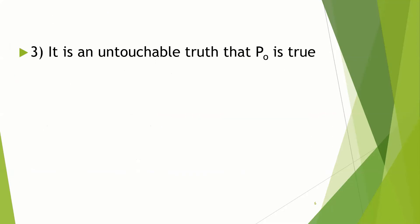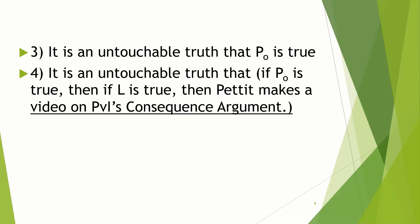Third premise: it's an untouchable truth that P is true. That seems reasonable — there's nothing anyone can do now, or could have done during their lifetime, to make anything about the distant past false. We can't time travel, so it's an untouchable truth that P-zero is true. We can't make it the case that Lincoln was not assassinated, for example; nobody can do anything about that. Fourth: it's an untouchable truth that if P is true, then if L is true, then Pettit makes a video on PVI's consequence argument.